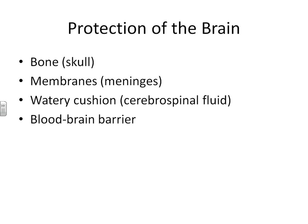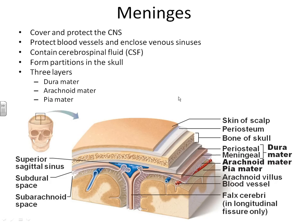We protect our brain with our skull. Directly underneath our skull, we have a set of membranes called the meninges. Below or deep to the meninges, we have a layer of cerebrospinal fluid, which gives our brain some buoyancy and a watery cushion. Underneath the cerebrospinal fluid, we have what most people call the blood-brain barrier. Now let's take a closer look at the meninges.